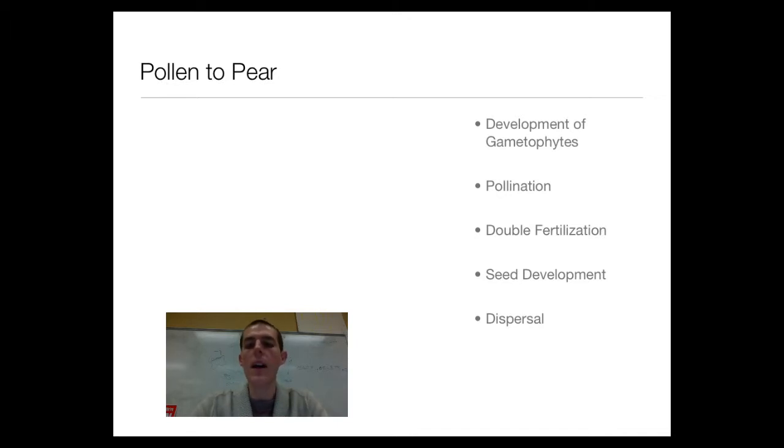The basic steps are as follows: development of gametophytes, that's making your pollen and your eggs, pollination, double fertilization, seed development and dispersal, and then after that you would have seed germination. So those are our steps we're going to go through, let's get to it.